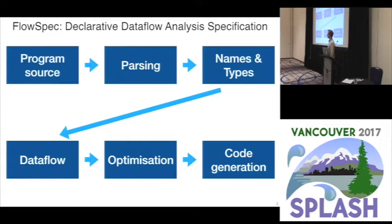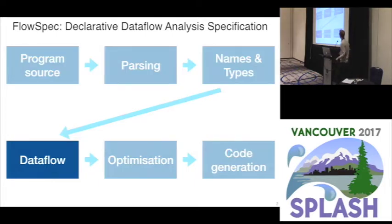So if we look at just a simple pipeline of a compiler, we have the program source, which is parsed, there's some name and type analysis, some data flow analysis, some optimization, some code generation. Of course it's simplified, but what we're going to focus on here is data flow analysis and how to express that in a nice and concise way.